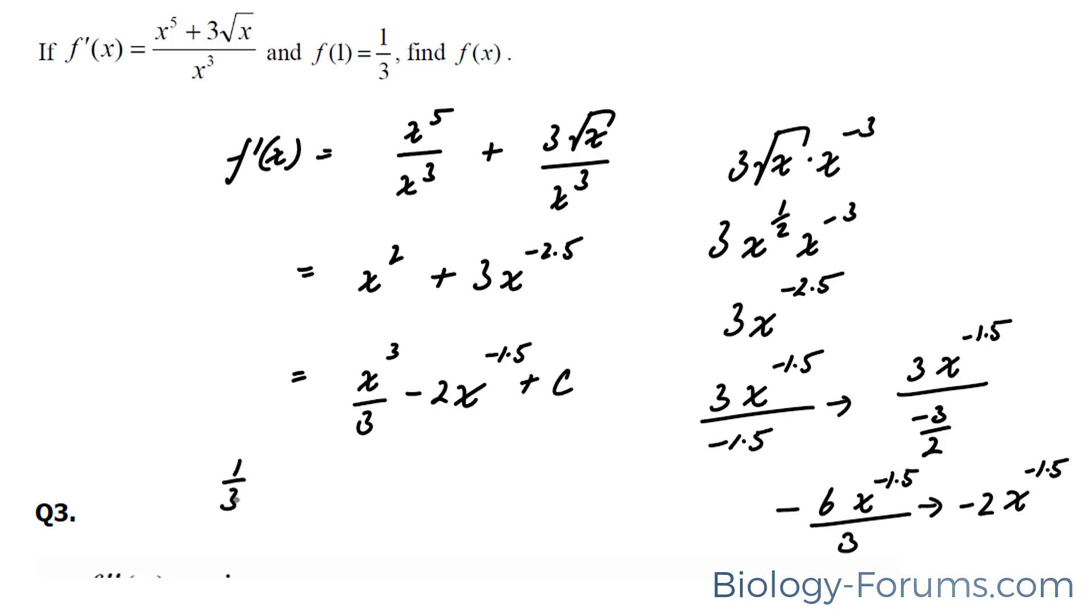So we're going to write down 1 over 3 is equal to 1, and we're replacing this x with that 1 to the power of 3. That becomes a third. 2 times 1 to the power of negative 1.5 is equal to 2 plus c. We're going to bring that over, and they cancel. We're also going to bring that over as well, and therefore,